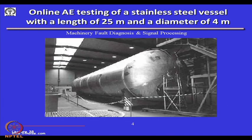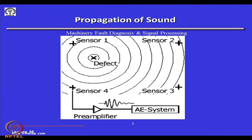This photograph shows acoustic emission testing being done on a 25-meter length pressure vessel of diameter 4 meters. It can be instrumented with pressure sensors or acoustic emission sensors, and these signals can be analyzed to find out the source of leaks.